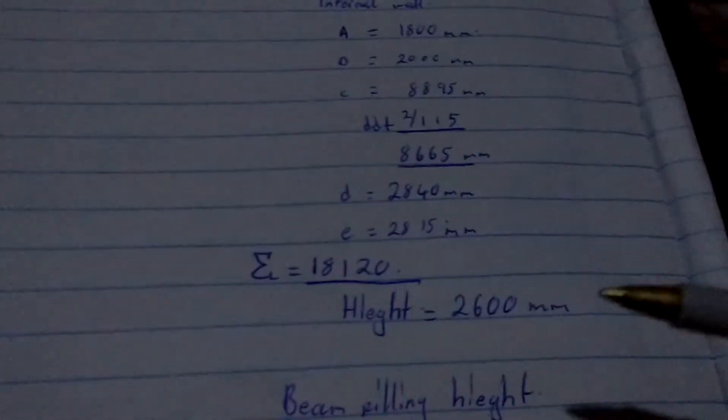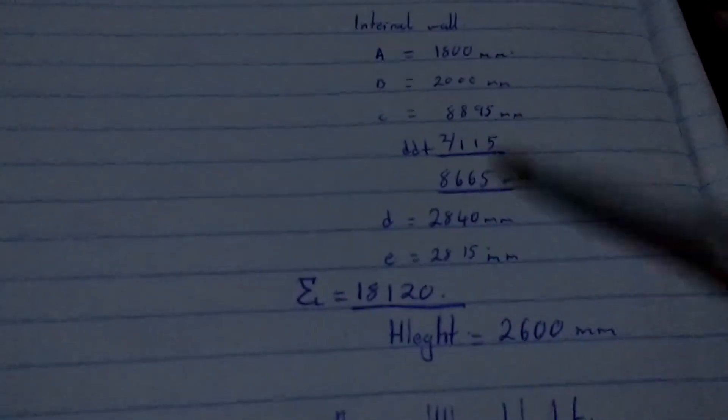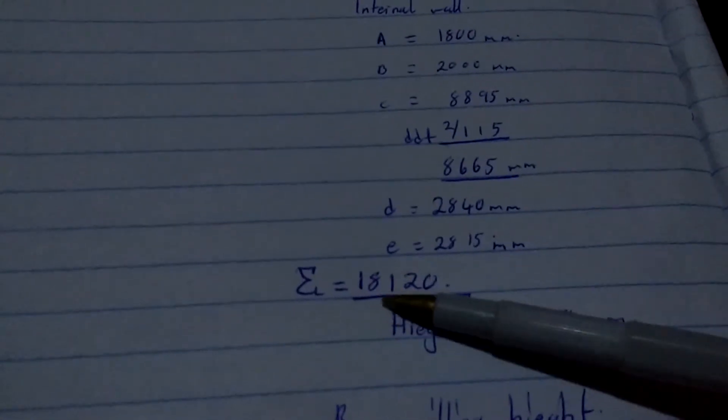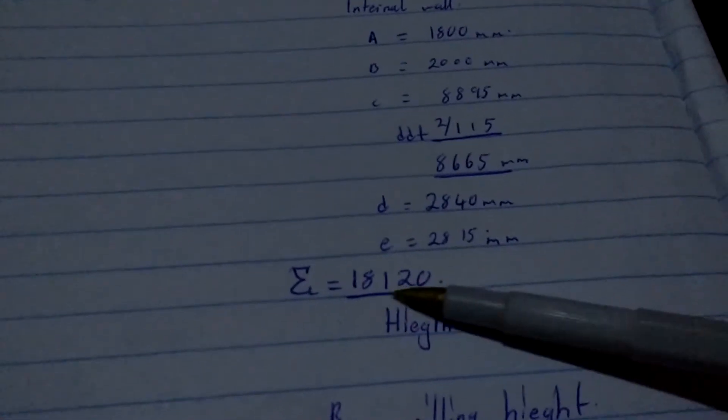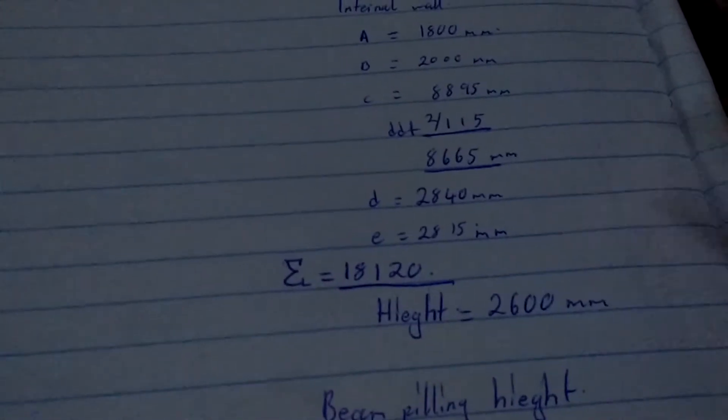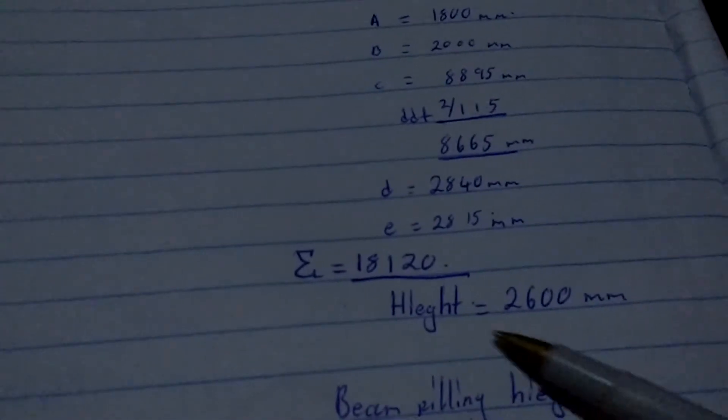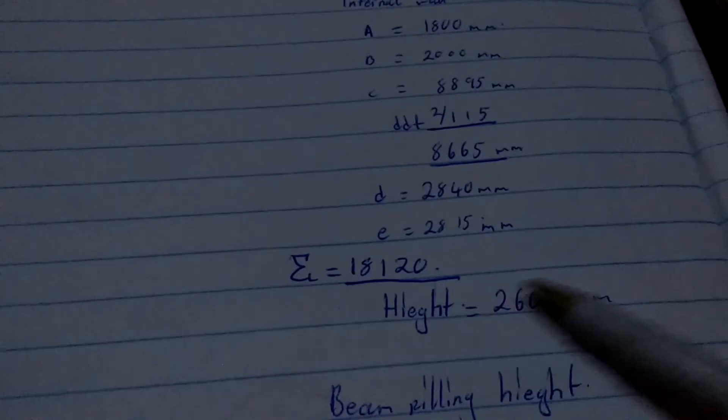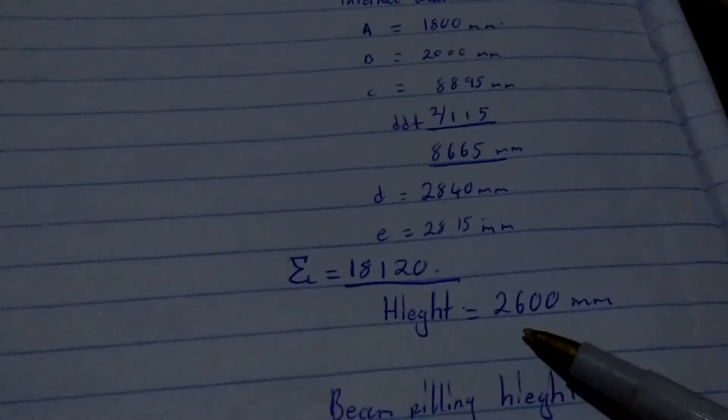So those are all. If we sum up those walls, we get, if we make the summation of those walls, we get 18,120 millimeters. And then our height is 26, sorry, it's 2,600 millimeters.